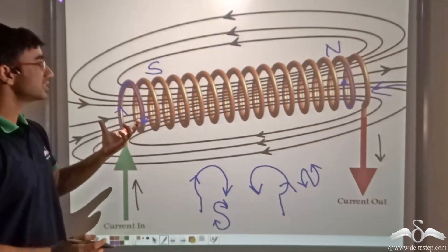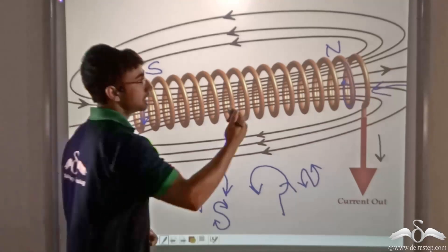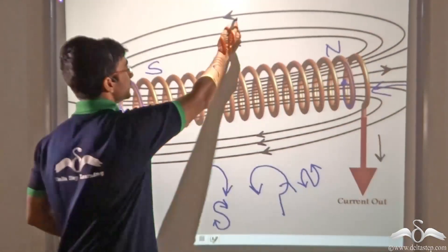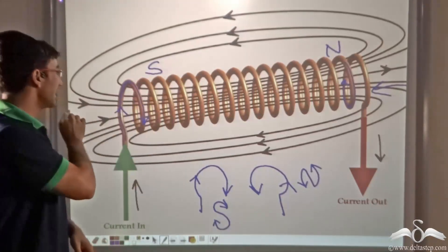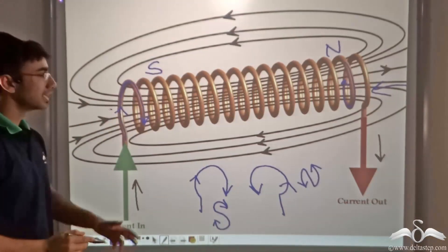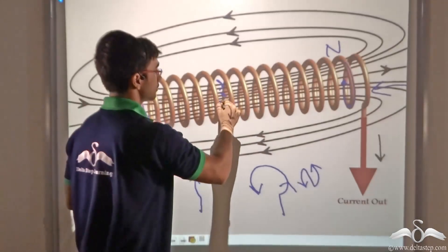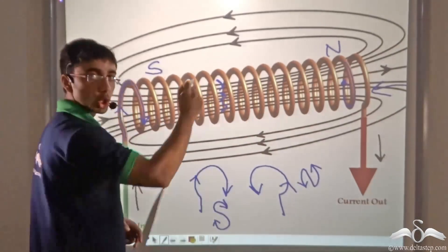And as you can clearly see from the field lines, the magnetic field lines are leaving the north pole, travelling all the way outside the solenoid and entering at the south pole. And inside the solenoid, they are travelling from south to north.